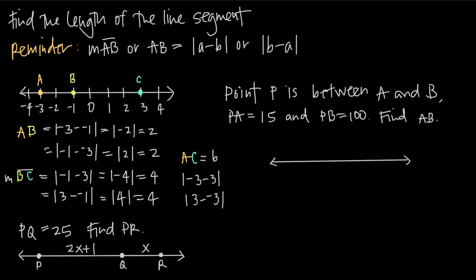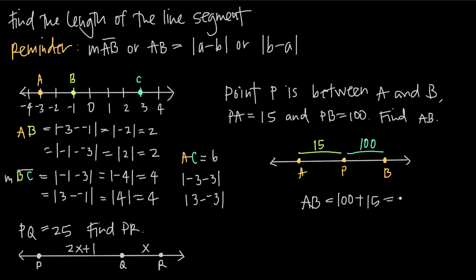It tells us point P is between A and B, so we draw points A and B with point P somewhere in the middle. PA is equal to 15, so the distance between P and A is 15. PB is equal to 100, so the distance from P to B is 100. This just goes back to the segment addition postulate, which tells us that if we know the measure of one section of the line segment and we know the measure of the other section, we can just add them together to get the total. So the distance between A and B is equal to 100 plus 15, or 115.